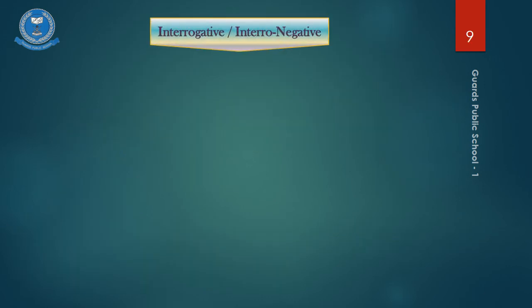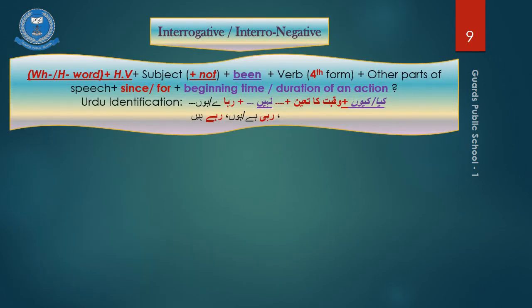Likewise, in the interrogative or intronegative sentence in Urdu, we will, apart from the identifications raha, rahi, etc., also have the question words like kya, kiyon, etc. And in case of intronegative, the Urdu word of negation nahi.